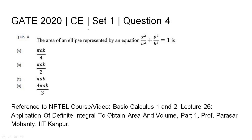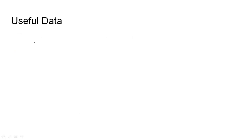GATE 2020 Civil Engineering Set 1, Question 4: The area of an ellipse represented by the equation x²/a² + y²/b² = 1. Four options are given: πab/4, πab/2, πab, and 4πab/3. The relevant NPTEL reference has been listed.